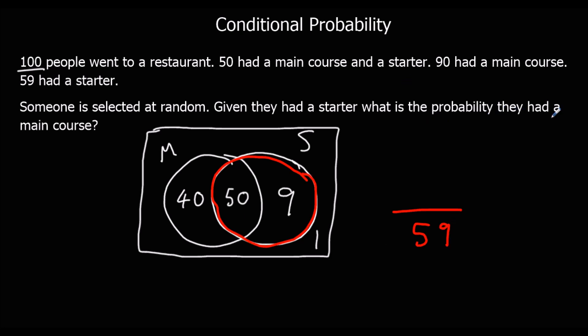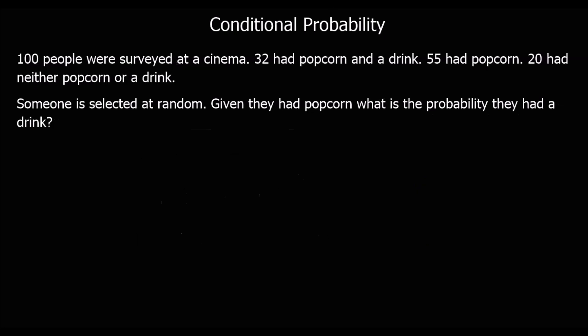What's the probability they had a main course? So in this circle, who had a main course? These people did. 50 out of 59. Okay, see if you can do this one. Pause the video and give it a go.